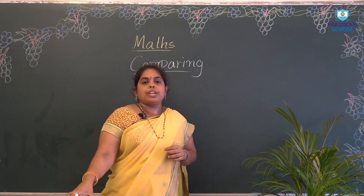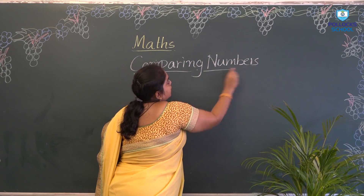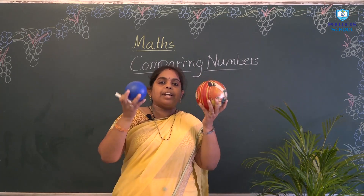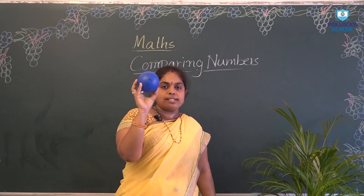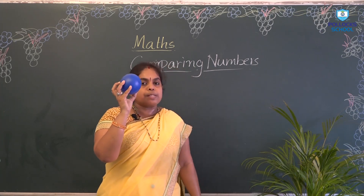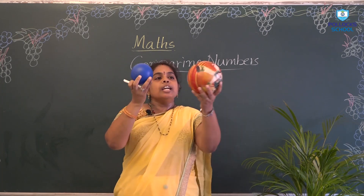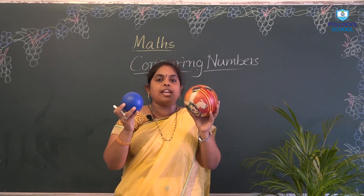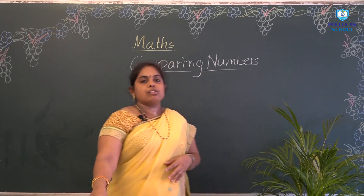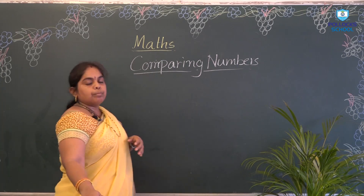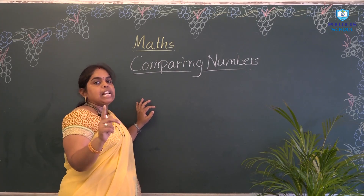Not only objects, we can also compare numbers — comparing numbers. When we are comparing, we need 2 or more than 2 objects. If in my hand only 1 ball is there, we can't say if it is big or small. But if I take 2 balls, then only we can compare and say easily which is small and which is big. In numbers also, we compare using 2 or more numbers. First, we will compare single-digit numbers, which are 0 to 9.